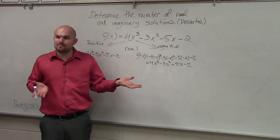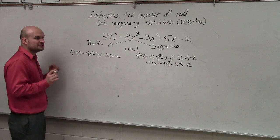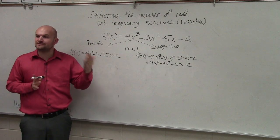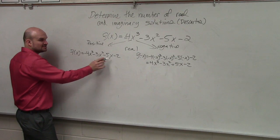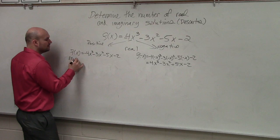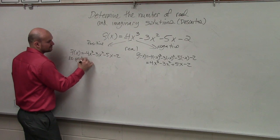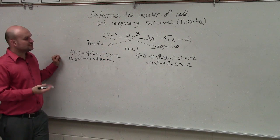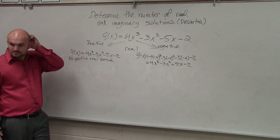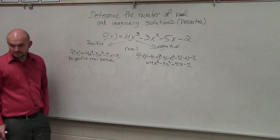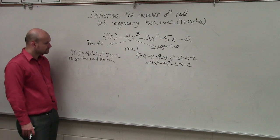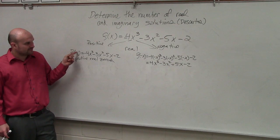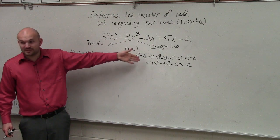Now, to determine the number of positive real zeros, all we're going to do is determine all the sign changes between the terms. So do I have any sign changes in f(x)? No. So there are no positive real zeros. If there are no sign changes and they're all negative, then there are no positive real zeros. You're testing f(x) for positive zeros. If there's no sign changes for this one, then there are no positive real zeros.